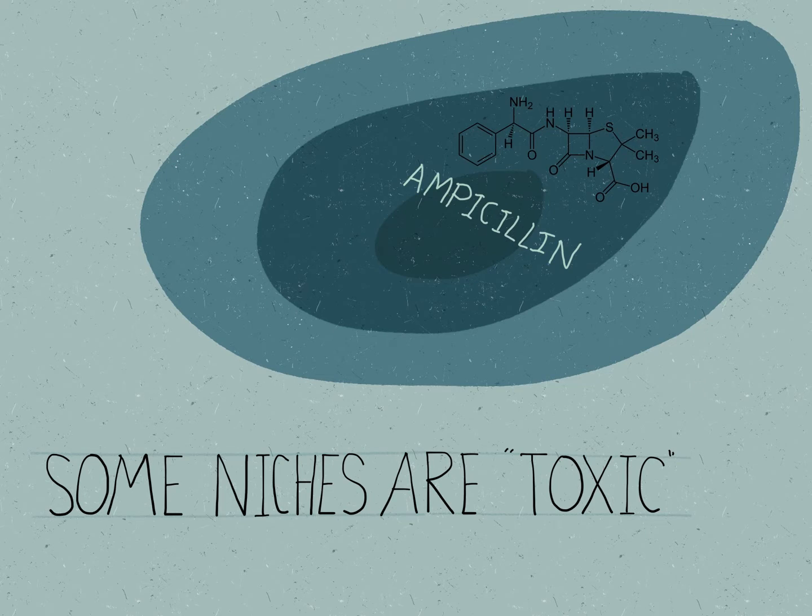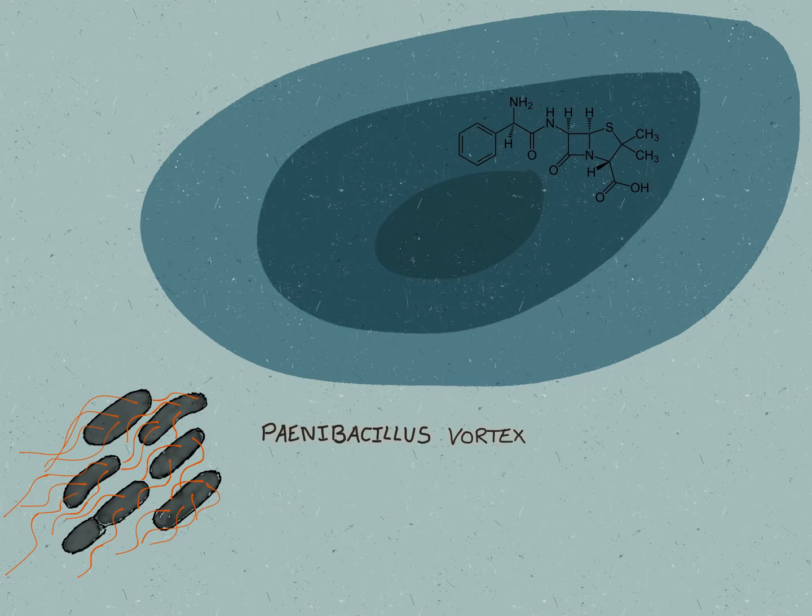So in our thought experiment we have a petri dish and part of the petri dish has got ampicillin in it. Ampicillin is toxic to P. Vortex. So P. Vortex is going to have problems swarming and colonizing this part of the petri dish.